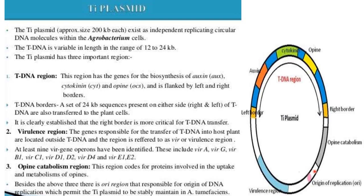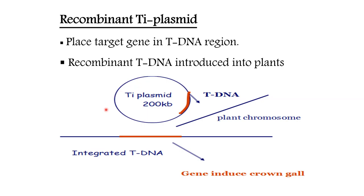There is also an origin of replication region responsible for DNA replication, which permits the Ti plasmid to be stably maintained in Agrobacterium tumefaciens. The target gene in the T-DNA region of the recombinant T-DNA is introduced into the plant chromosome, and the integrated T-DNA induces crown gall in the plant.